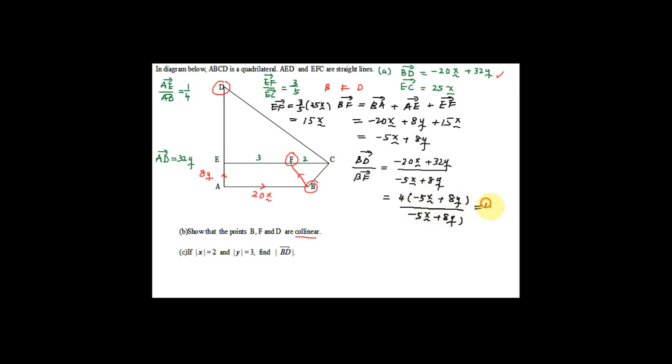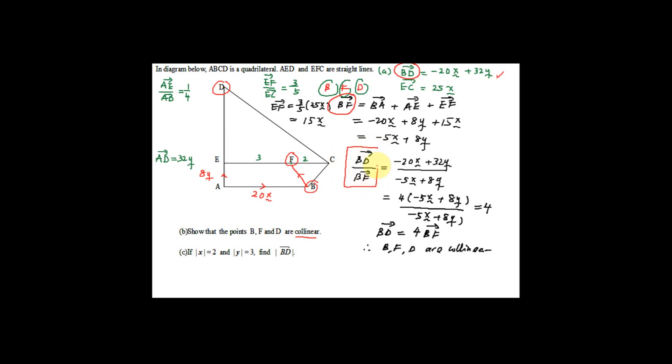Factorizing the numerator, BD equals 4 times (negative 5x plus 8y), which equals 4 times BF. The terms cancel to give a constant of 4. Since BD equals 4BF, a constant ratio exists, so we can conclude that B, F, and D are collinear. To summarize: find two vectors involving the three points, then check their ratio is a constant.